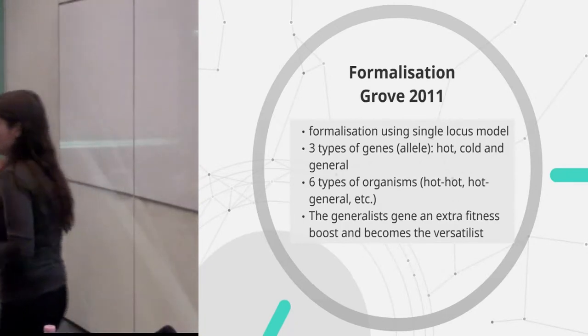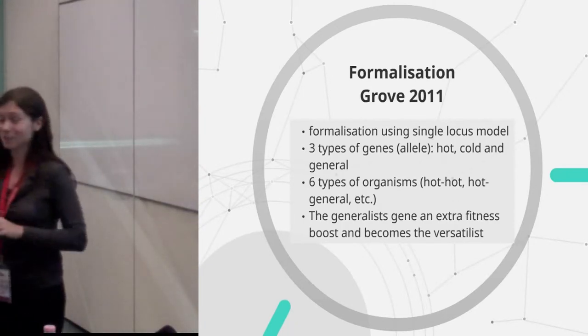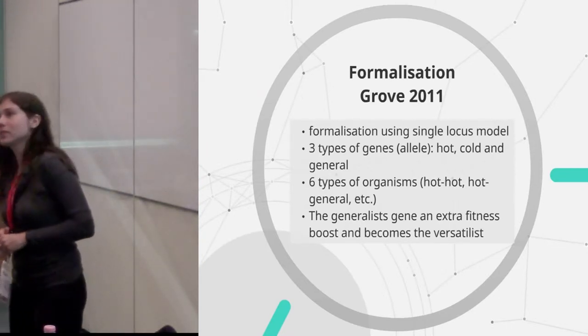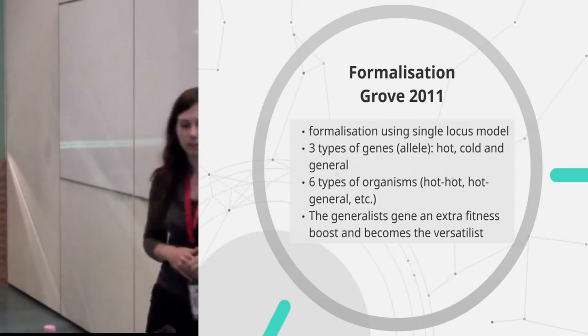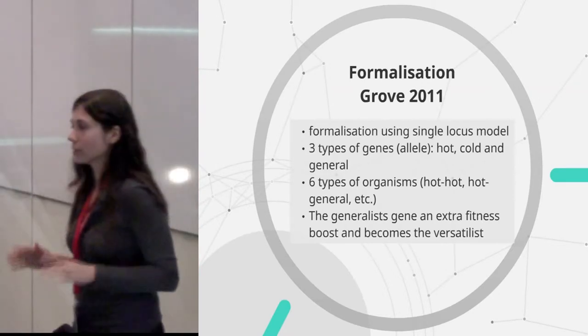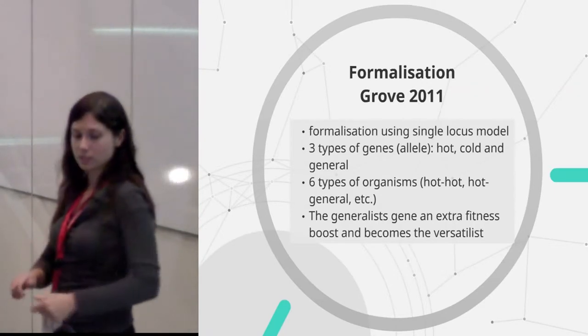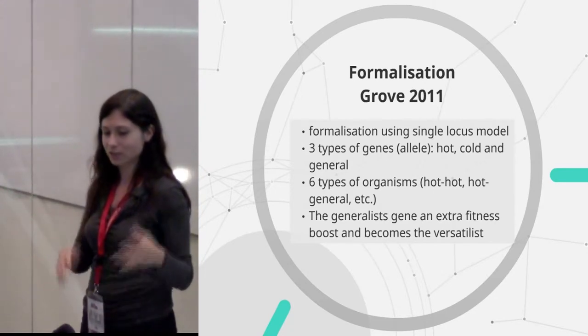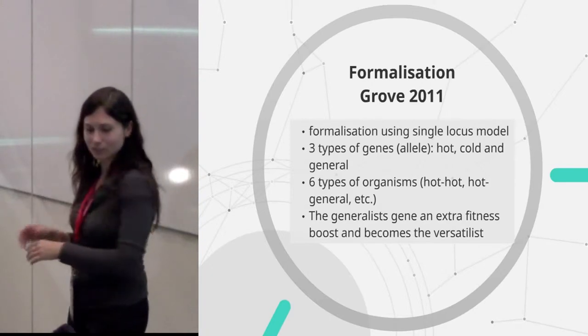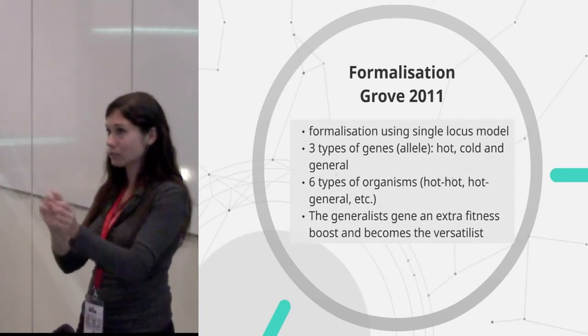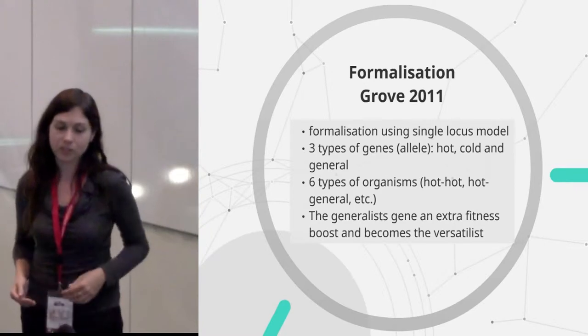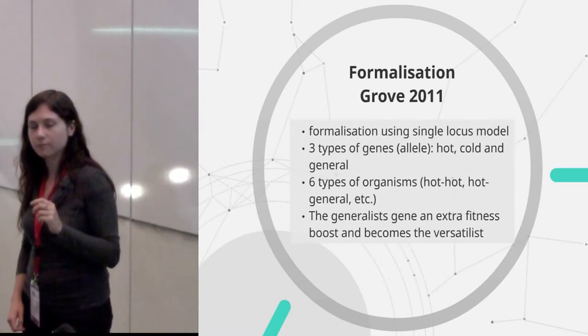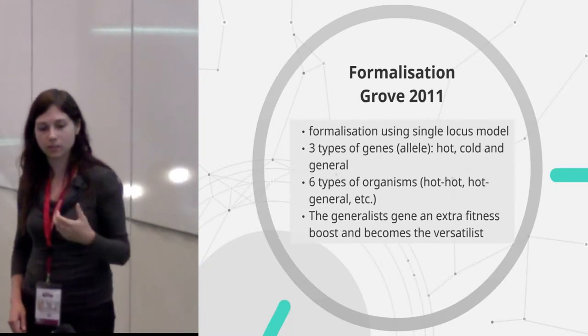So, the variability hypothesis has been already formalized, so I didn't have to do that. I was very happy about that by Montgrove in 2011. And what he did, he took a genetic model, which is called the single locus model, and he said, okay, we're going to have three types of genes, the hot genes, the cold genes, and the general genes. And from that, you can imagine we have six individuals and they're hot hot, hot general, cold general, general general. So, like, they have all two slots for the gene and they can have one of the three genes in each slot.